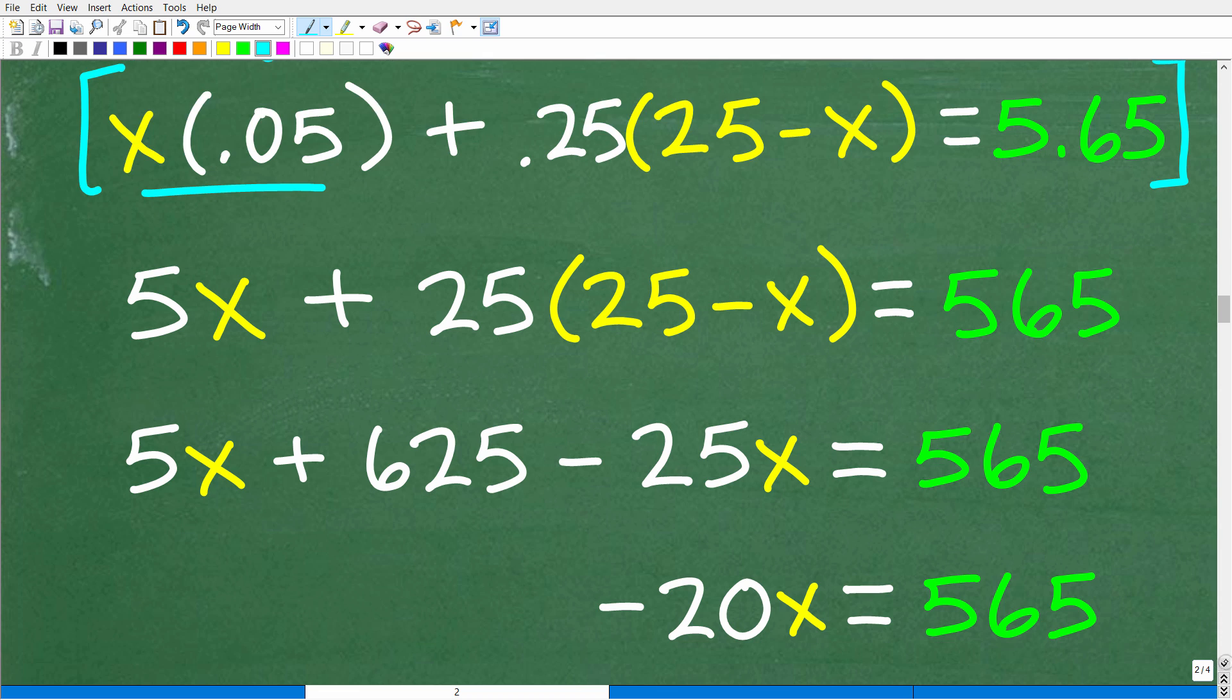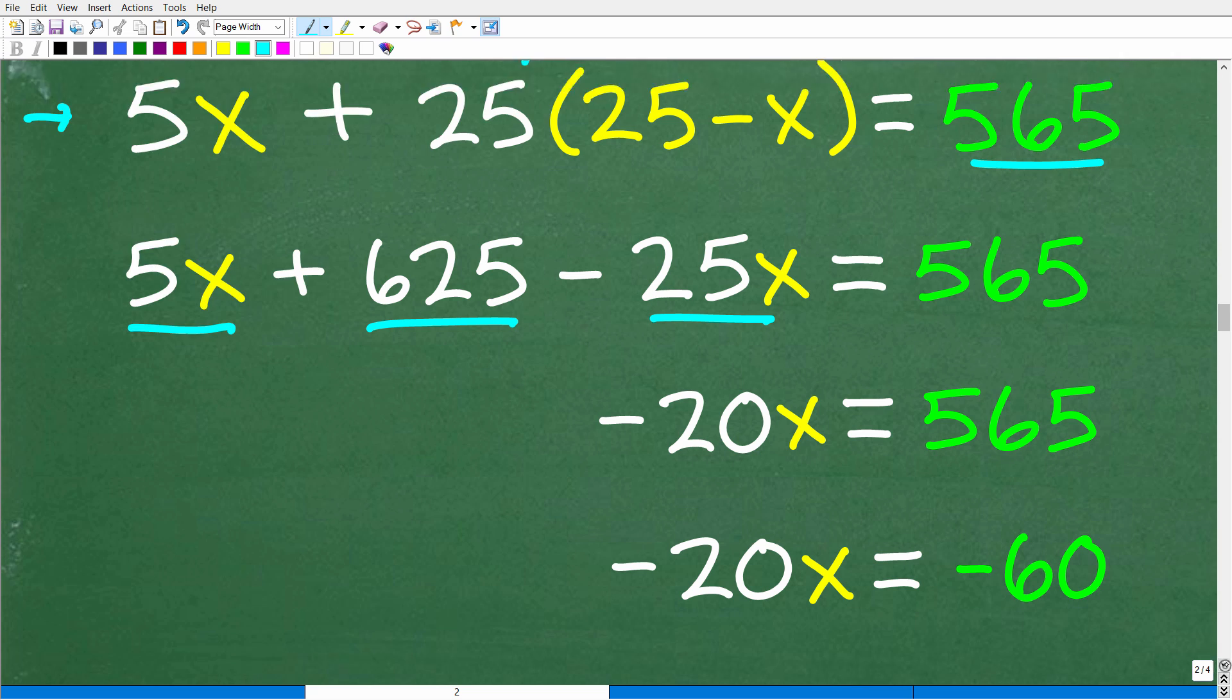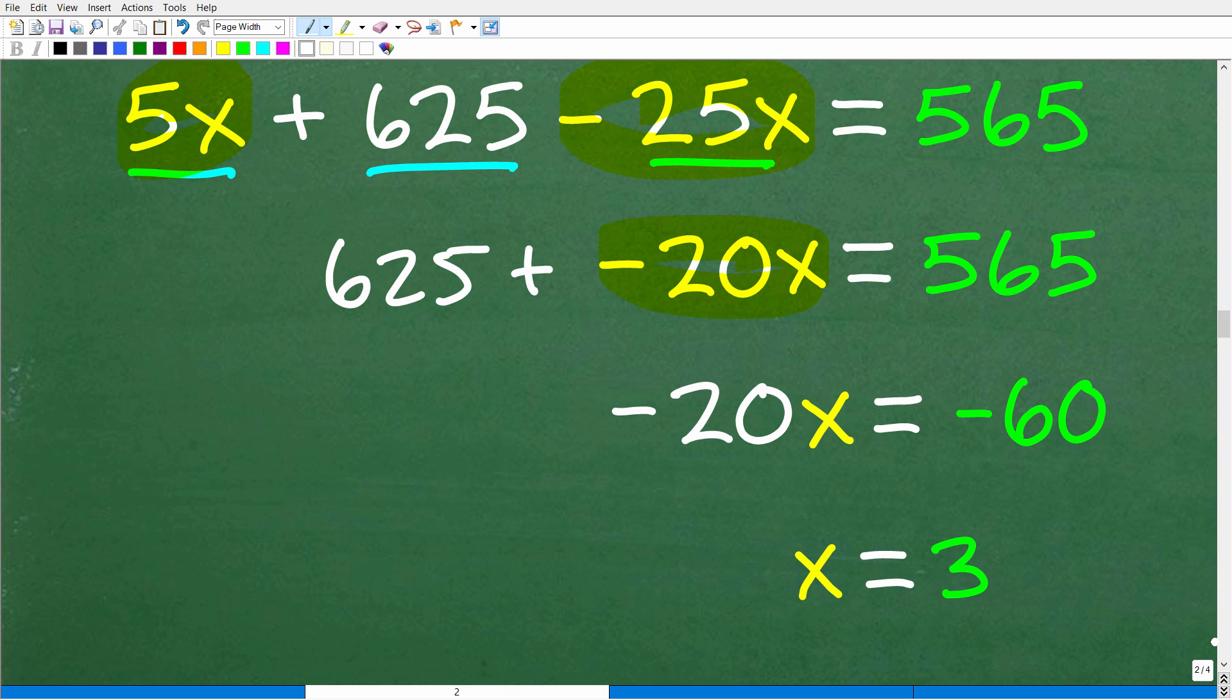So I'd much rather work solving this equation right here than dealing with these decimals. So now let's go ahead and focus on solving this. So first things first, you have to use the distributive property right here. So 25 times 25 is 625. So I have 5x plus 625. 25 times negative x is negative 25x. And then of course I have my 565 here. So now I'm going to combine like terms: 5x and negative 25x gives me negative 20x. And actually I forgot to put my little 625 right here. See that, even I make mistakes, but as long as you catch them, that's what's important. All right. So we have 625 plus negative 20x is equal to 565.